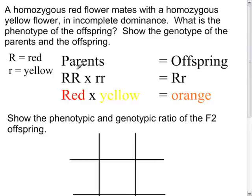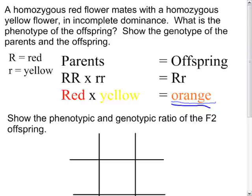Using the letter R for red and lowercase r for the recessive yellow trait, the parents would be homozygous dominant red and homozygous recessive yellow. The offspring would all be heterozygous (capital R and lowercase r), and the phenotype would be a mix of red and yellow, which is orange. If you used different letters, that's fine, as long as one parent is homozygous dominant and the other is homozygous recessive using the same letters.